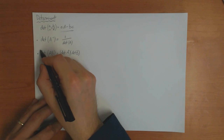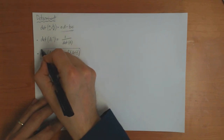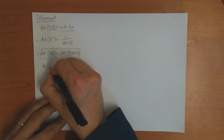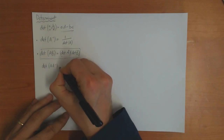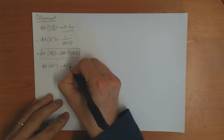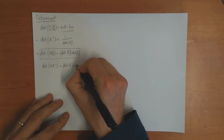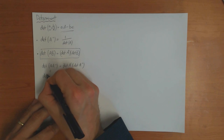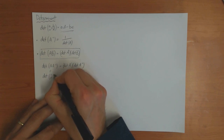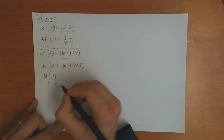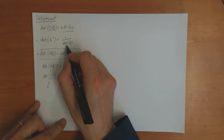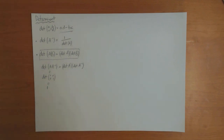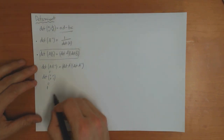In fact, it's enough just to prove the product property, because using it you can prove the inverse one. If I consider det of A times A-inverse, this is equal to det of A times det of A-inverse. But we know that A times A-inverse equals the identity matrix, whose determinant is 1, and the result follows from this equation.